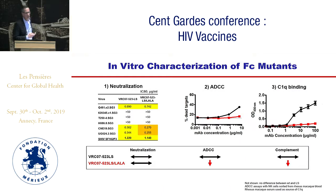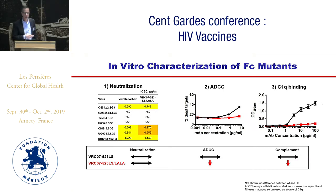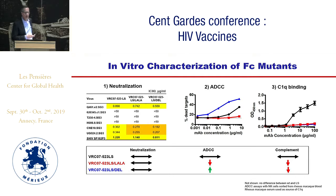Here are the in vitro results when we made these modifications, based upon VRC07-523-LS. For neutralization, if we make the LALA mutation across a panel of viruses, the modification does not affect neutralization. ADCC, however, is significantly decreased by the LALA mutation, as is C1Q complement binding. If we then make the DEL mutation, once again we don't affect neutralization. We do increase ADCC in vitro, but we also wipe out C1Q binding — we eliminate complement binding.